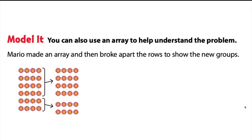You could also use an array to help understand what's going on in the problem. Here's the original six groups. You can see six rows with four flowers in each row, four flowers in each vase. So we have an array of six times four. And Mario is going to break that six into a group of four and a group of two. Just like he did on the last picture, but this one shows it with arrays if you prefer to see it that way.